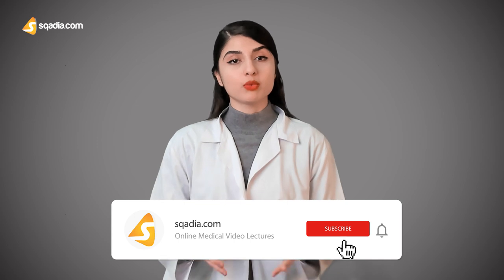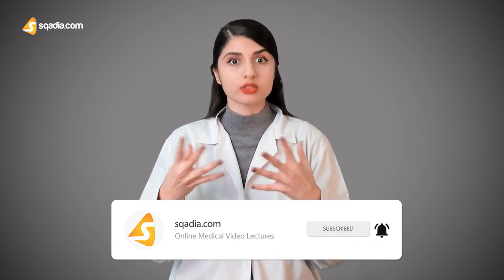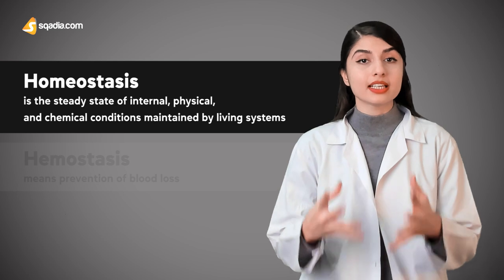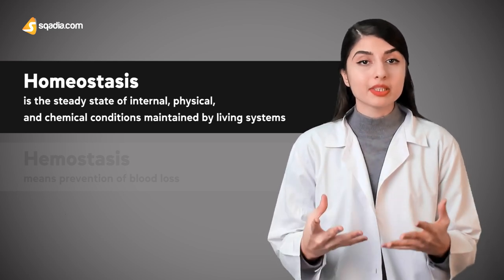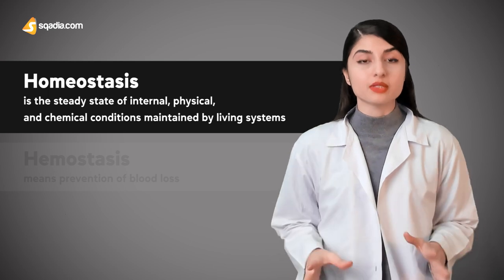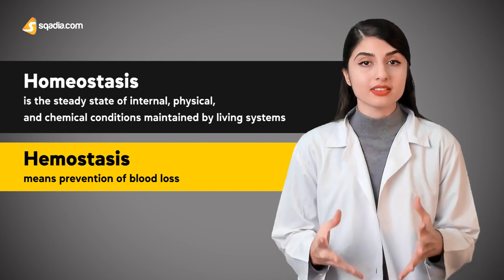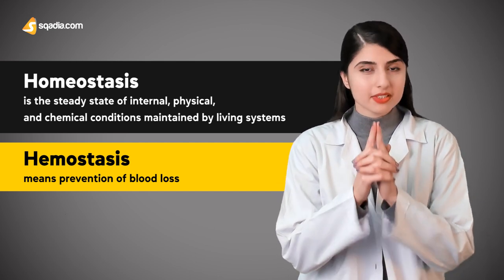You must be wondering that this term sounds awfully similar to the word homeostasis, but these two must not be confused. You can distinguish them by breaking the two terms down. Homeostasis is the steady state of internal physical and chemical conditions that are maintained by living systems, and hemostasis obviously means prevention of blood loss. Always keep this in mind.